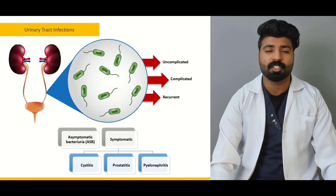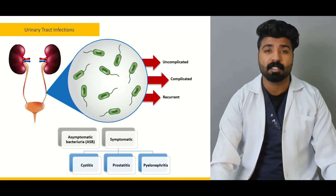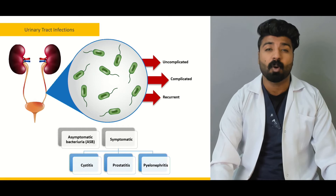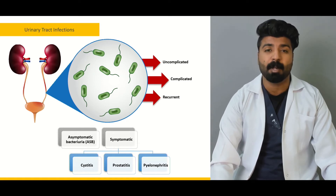We'll start with what urinary tract infections are and what structures might get affected. We're going to talk about further types — the difference between uncomplicated, complicated, and frequent UTIs — and we're going to talk about what asymptomatic bacteriuria and symptomatic bacteriuria are and what comes under their headings.